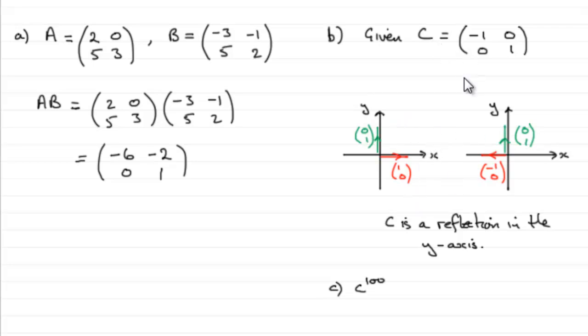Remember we discovered that C represents a reflection in the y-axis. So if we took these unit base vectors here and we multiplied this by C, what we get is this set of vectors, a reflection in the y-axis. So this would be the result of doing C.